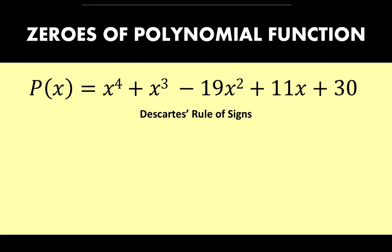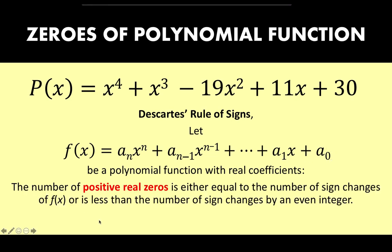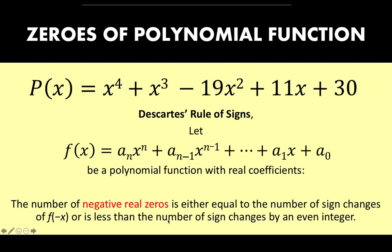One of them is to use the Descartes rule of signs. If you let f(x) be a polynomial function with real coefficients — meaning the coefficients a_n, a_(n-1), a_1, and a_0 are all real numbers — then the number of positive real zeros is either equal to the number of sign changes of f(x), or is less than the number of sign changes by an even integer. And the number of negative real zeros is either equal to the number of sign changes of f(-x) or is less than the number of sign changes by an even integer.